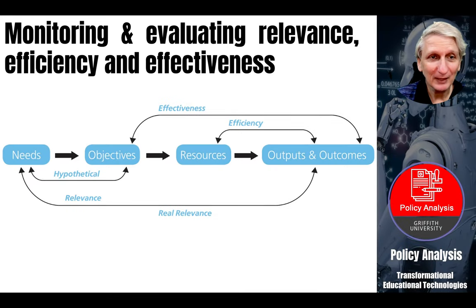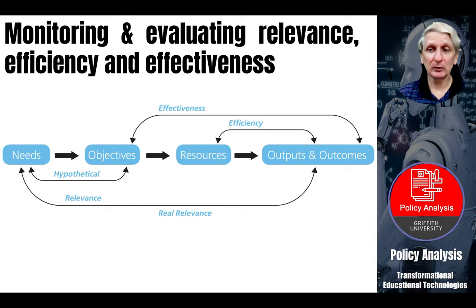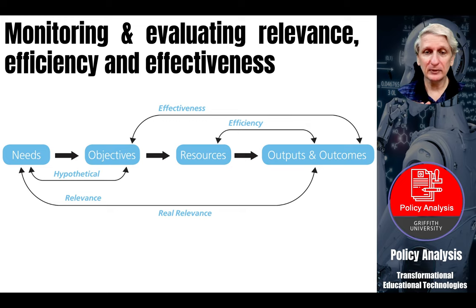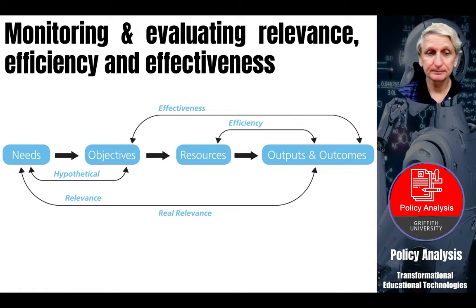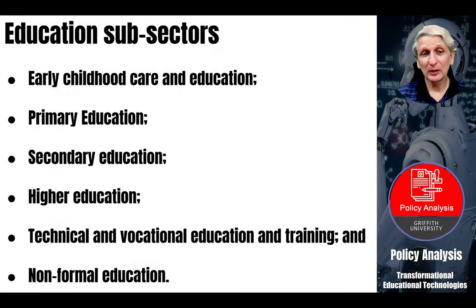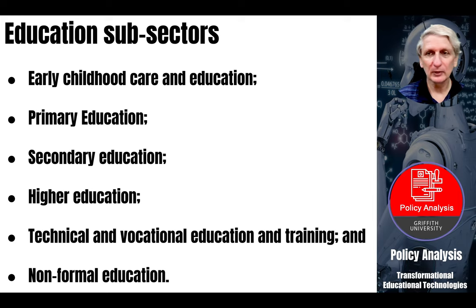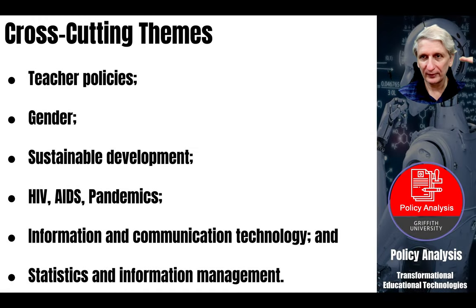A model for monitoring and evaluating the relevance, efficiency and effectiveness of these programs is explored in the document. You're going to need to describe your evaluation process for your transformation plan, and this provides a model you can use. The key element is that you're not just looking at one instance at the end of the program — there should be opportunities to make modifications throughout the process of implementation. The document also looks at various subsectors of education with examples and elaborations of how policy development relates to these different areas and the overall themes that cut across all dimensions.